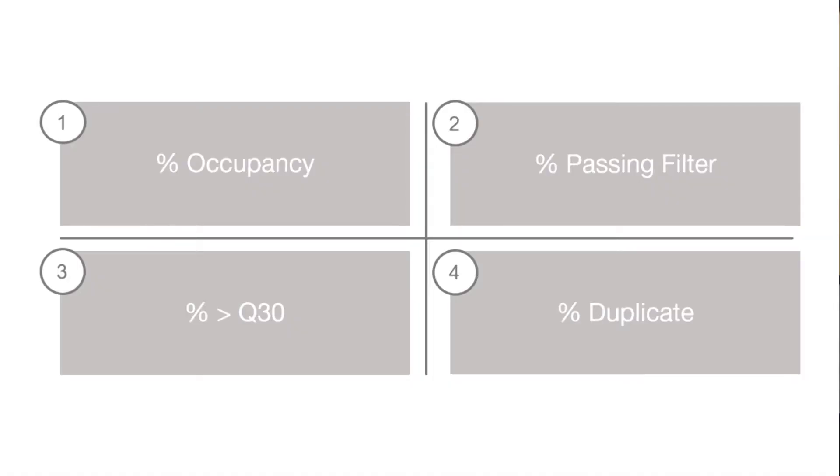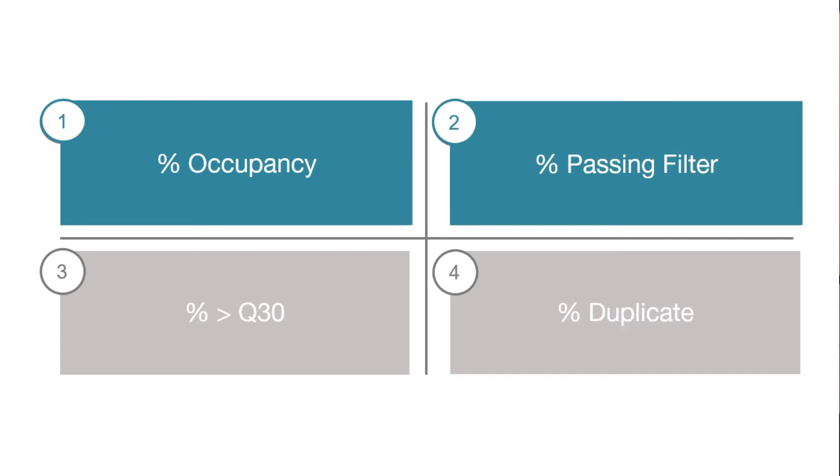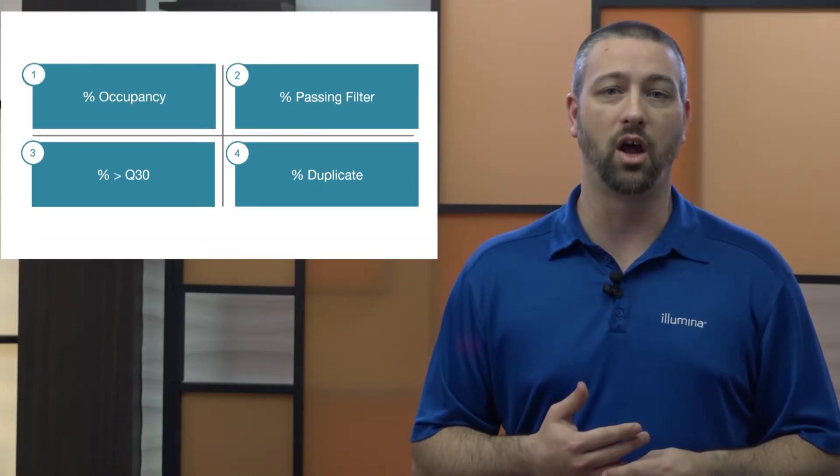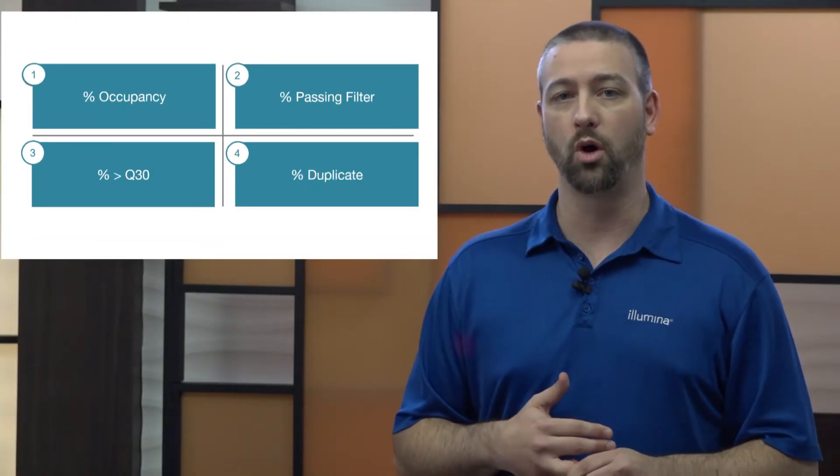How can you tell if a run has been over or under loaded? The percent occupancy, percent passing filter, percent greater than Q30, and percent duplicates metrics are the best tools available to identify if a run is under loaded, optimal, or overloaded.